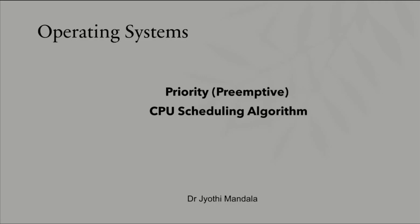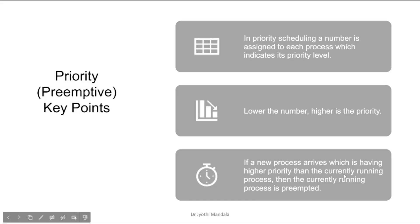Today we will learn in detail about this priority preemptive CPU scheduling algorithm. The same logic will be applied here. For each process, a priority will be assigned — a number will be assigned to each process. The lower the value, the higher the priority. It's like a ranking.